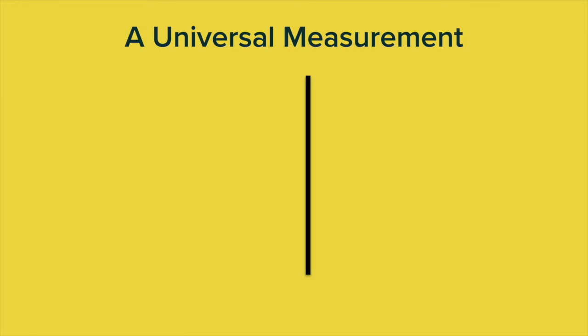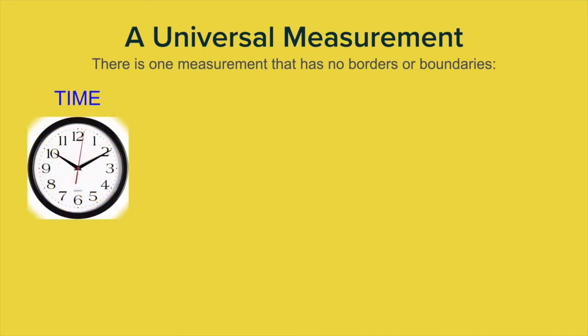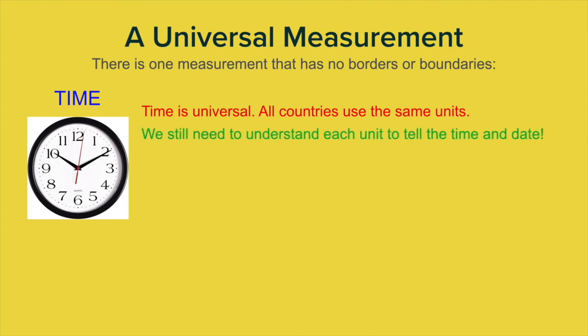We're going to talk now about a universal measurement. There is one measurement in the whole world that has no boundaries and no borders, that everybody uses. What do you think it is? Think of a measurement that every single person on this planet uses. Yeah, that's right. It's time. We all use time the same. And time is universal. All countries use the same units. There isn't a single country that I can think of that doesn't use the same time measurement as we all do. We still need to understand each unit though to tell the time and the date. If we don't understand the units of time, then we can't tell the time. So let's go through them as quickly as possible. You probably know them anyway.